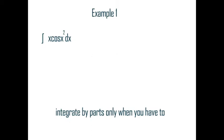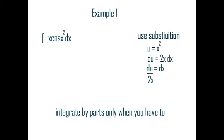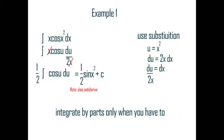Example 1: Integrate x cosine(x²) dx. Wait — use substitution for this! Use IBP only when you have to. In this problem, even though it's a composition, use substitution. Let u equal x squared, du equals 2x dx, so du over 2x equals dx. Replace dx with du over 2x; the x's cancel. Take out the 1 over 2, plug in u, and it equals one half sine(x²) plus C.